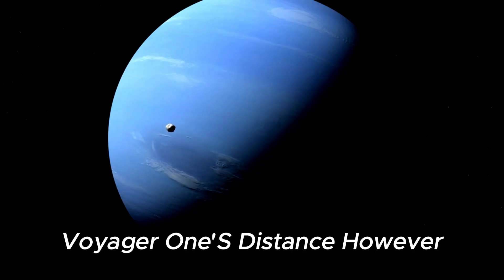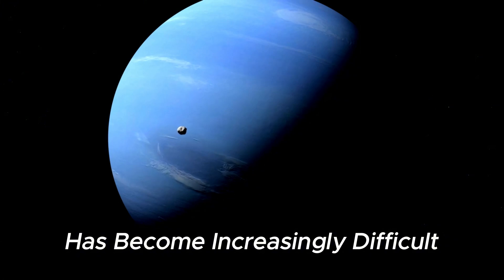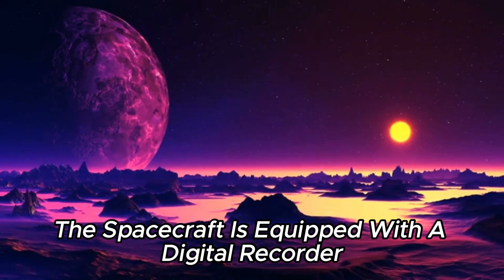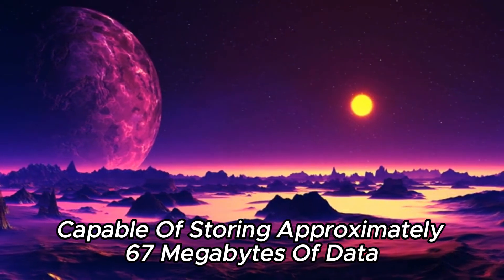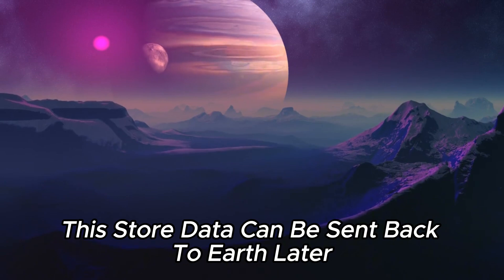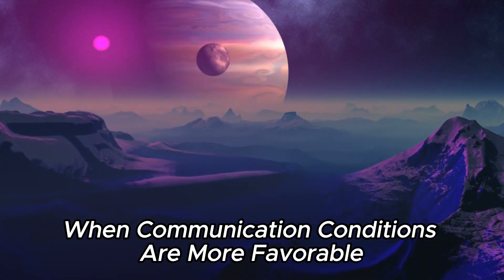Voyager 1's distance, however, means that direct communication with Earth has become increasingly difficult. To deal with this, the spacecraft is equipped with a digital recorder, DTR, capable of storing approximately 67 megabytes of data. This stored data can be sent back to Earth later when communication conditions are more favorable.